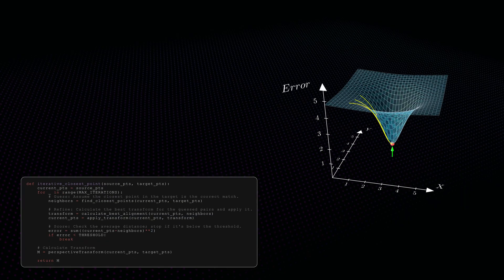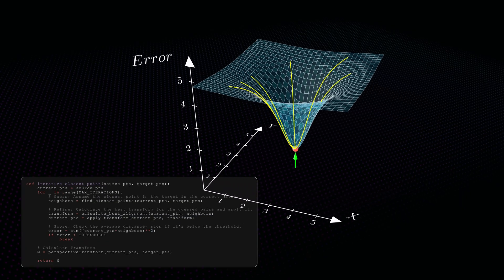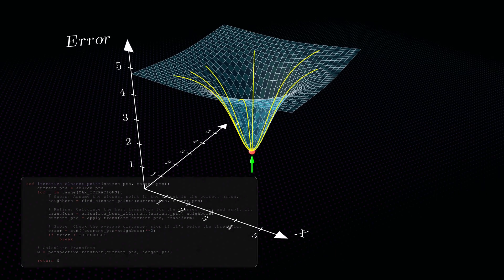For most shapes, this is enough. The search looks like a smooth valley with one clear bottom. Drop in anywhere, and the ball rolls to the right answer.